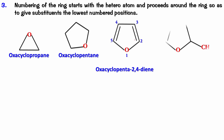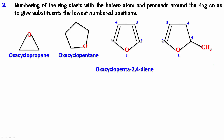Let's try one more. Oxygen will be one, and we give preference to the double bond, so the double bond gets position two. Counting: one, two, three, four, five — so there is a methyl substituent at position five. The parent is always oxacycloalkane or alkene. The name is 5-methyloxacyclopent-2-ene.